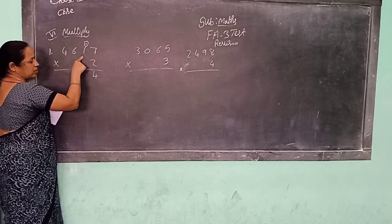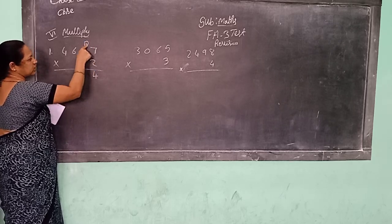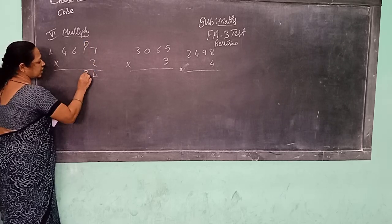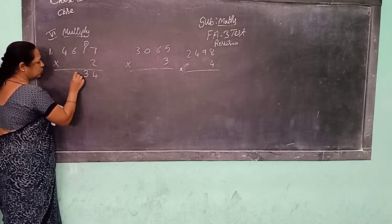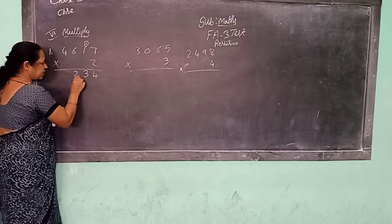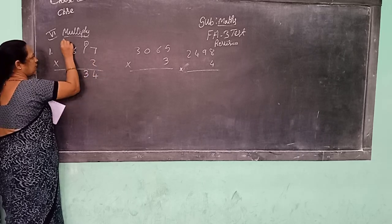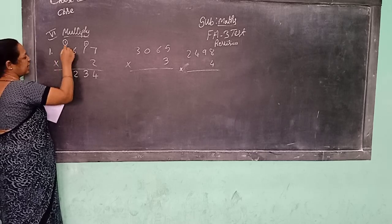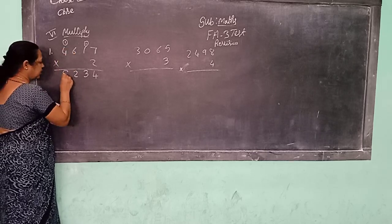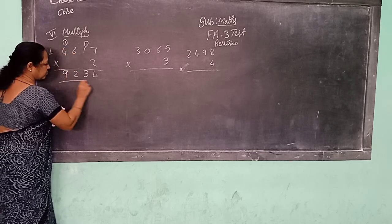2, 1's are 2. 2 plus 1, 3. 2, 6's are 12. Right 2, carry 1. 2, 4's are 8. 8 plus 1, 9.